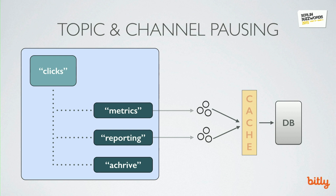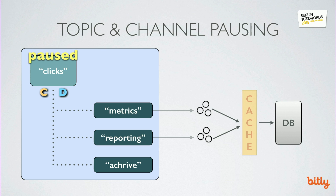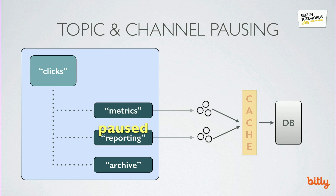Topic and channel pausing are a couple of handy features of NSQ tooling. We've got the metrics channel, a reporting channel, and an archives channel. Normally messages get copied, delivered, and processed successfully. When we pause the clicks topic, messages start pooling at the topic level. This is really useful for operational things such as renaming channels, introducing new ones in an atomic window, or introducing new systems that you want your data to write into. When we unpause, the messages will be processed successfully. We also have channel pausing — if we pause the reporting channel, messages will queue at that channel and again be processed successfully when we unpause.